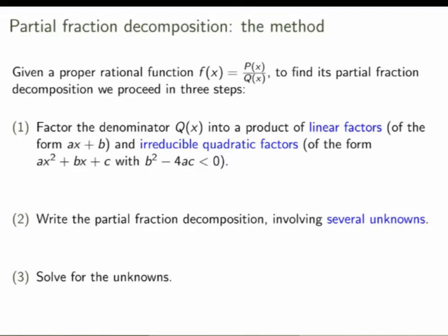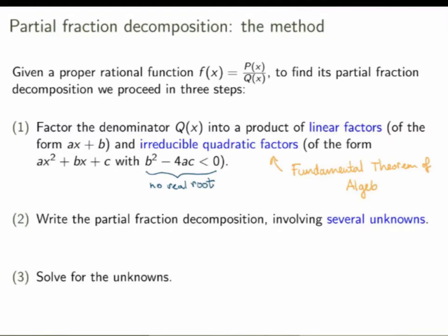What does it mean for a quadratic factor to be irreducible? It means that the discriminant b squared minus 4ac is less than 0, so the quadratic factor has no real root. There's a fundamental result called the fundamental theorem of algebra which tells us that an arbitrary polynomial can always be factored into a product of linear factors and irreducible quadratic factors. So step one can always be done for arbitrary polynomials.